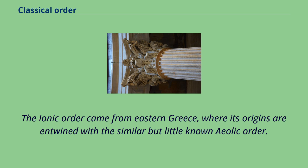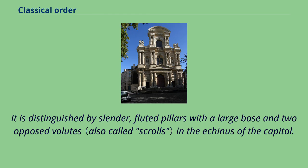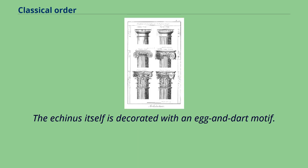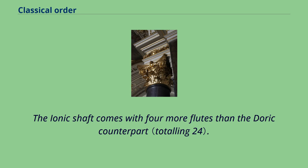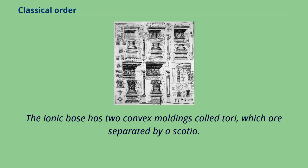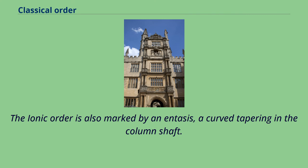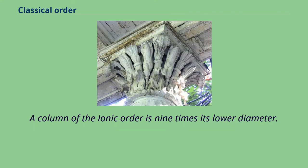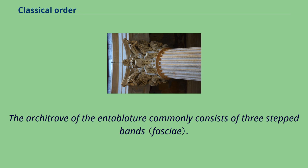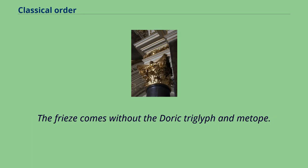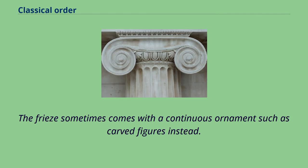The Ionic order came from eastern Greece, where its origins are entwined with the similar but little-known Aeolic order. It is distinguished by slender, fluted pillars with a large base and two opposed volutes in the echinus of the capital. The echinus itself is decorated with an egg and dart motif. The Ionic shaft comes with four more flutes than the Doric counterpart. The Ionic base has two convex moldings called tori, separated by a scotia. The Ionic order is also marked by an entasis, a curve tapering in the column shaft. A column of the Ionic order is nine times its lower diameter; the shaft itself is eight diameters high. The architrave of the entablature commonly consists of three stepped bands, and the frieze sometimes comes with a continuous ornament such as carved figures instead.